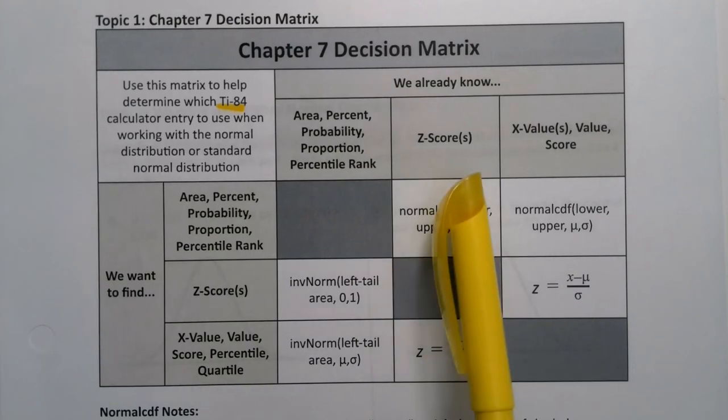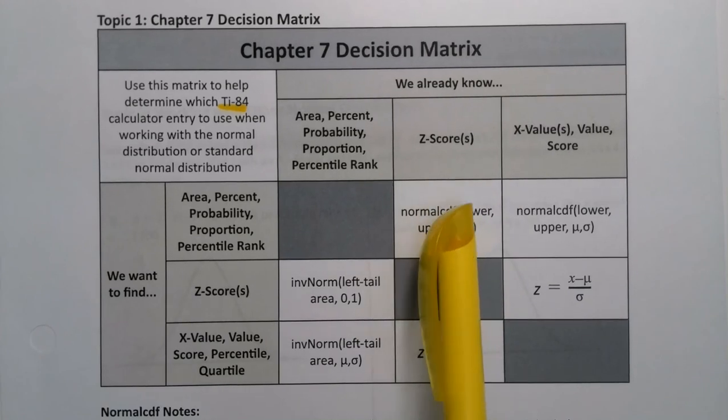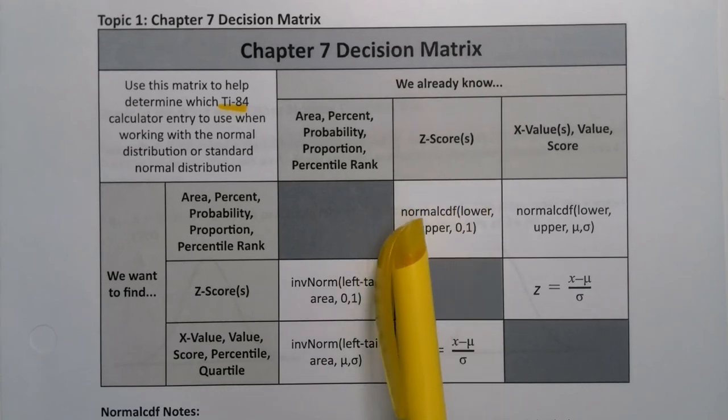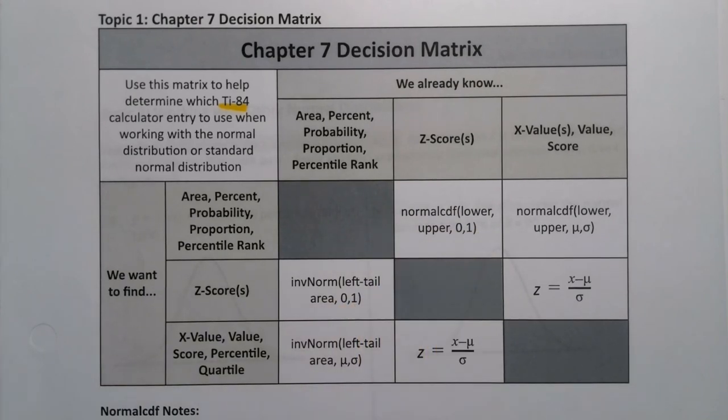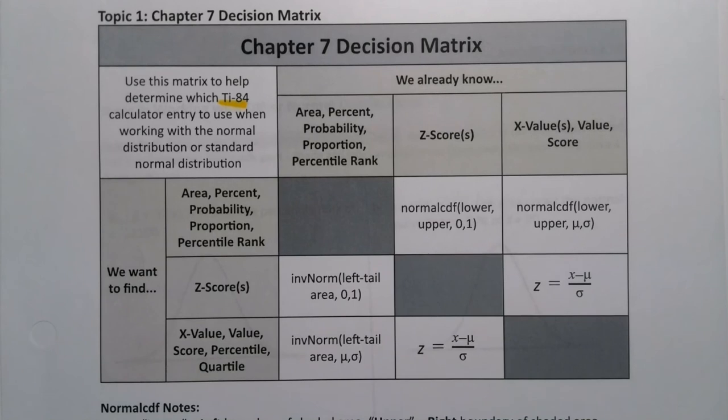So far we've only done the z-score portions of the decision matrix. This piece with the normal CDF where it ends in 0 and 1, and this piece over here where it ends in 0 and 1. But what about if it's not the z-curve necessarily, but we're working with any curve, any normal curve? Well, then we would use a different portion. We would use normal CDF, lower, upper, where it ends in mu and sigma, or inverse norm where it ends in mu and sigma.